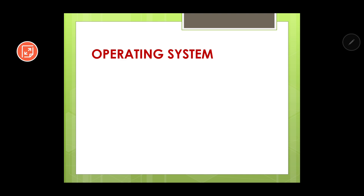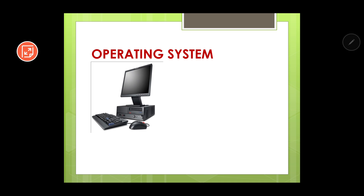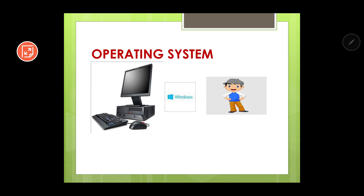Now let us come to the computerized definition of the operating system with an example. Let us say you buy a brand new computer and there is no operating system installed. The computer is there and you are very excited to use it, but there is a hindrance — no operating system. For using the computer, only the computer and the user is not sufficient; we require a middle object. The middle object is the operating system.